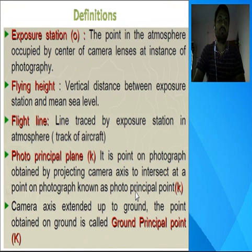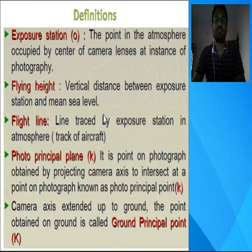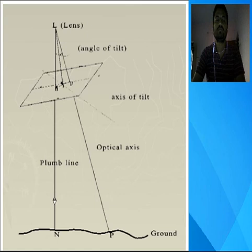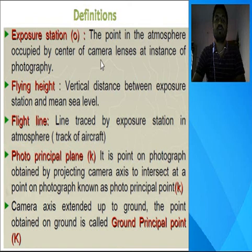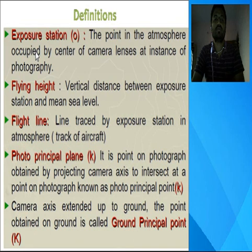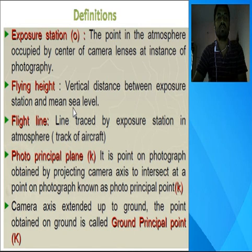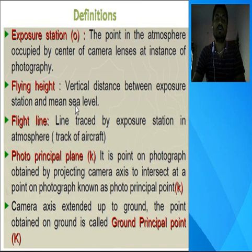Now we define the important terms in photogrammetry one by one. The exposure station, O, is the point in the atmosphere occupied by the center of the camera lens at the instant of photography. Flying height is the elevation of the aircraft or camera — it is the vertical distance between the exposure station and mean sea level. The flight line is the line traced by the exposure station in the atmosphere, which is the track of the aircraft along which a number of photographs are taken.